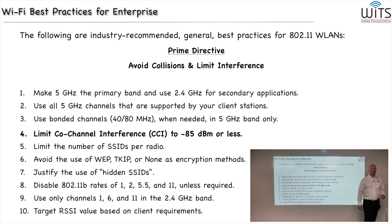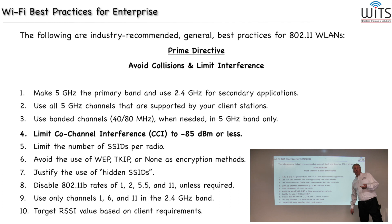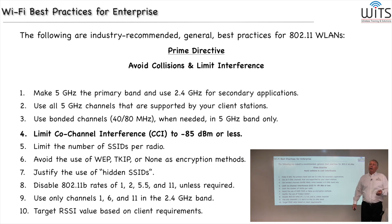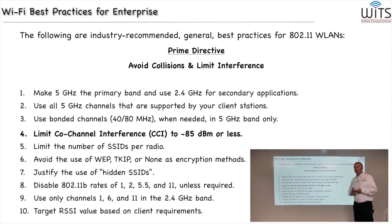We'd like you to limit the co-channel interference to -85 dBm. First of all, what's co-channel interference? There are two types of Wi-Fi based interference in Wi-Fi. The first one is known as adjacent channel interference, and the second one is known as co-channel interference.